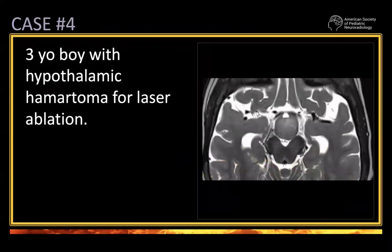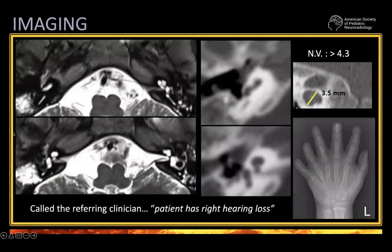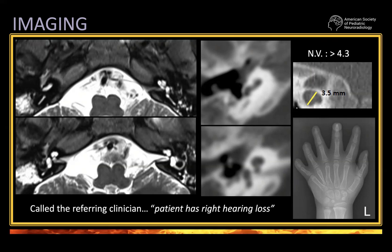Case four: a three-year-old boy with hypothalamic hamartoma for laser ablation. You can see the hypothalamic hamartoma. However, this is the inner ear — we have only a few sequences. The cochlea is small and we called the clinician. The patient has right-sided hearing loss. This is the appearance of the hand — something is wrong with it: we have six fingers here. This ear looks normal; this one looks frankly abnormal. These are not images tailored for the temporal bone — both CT and MRI — but just brain images.